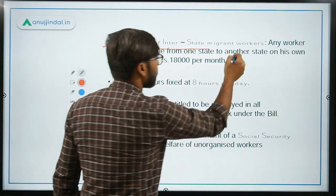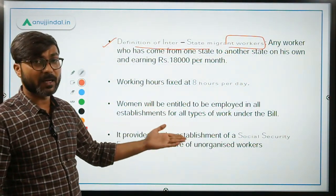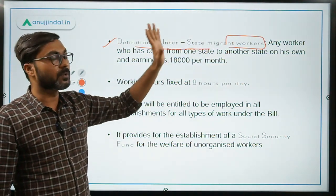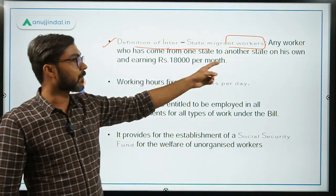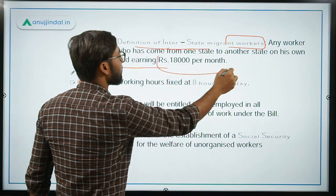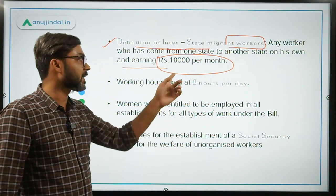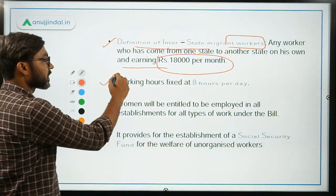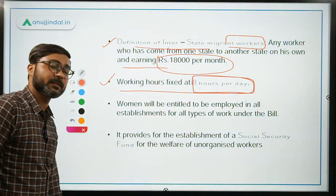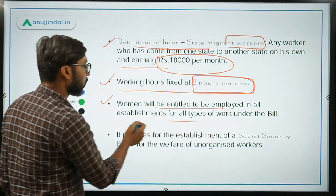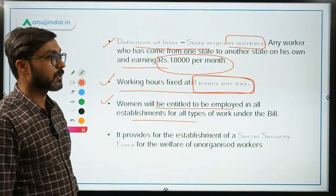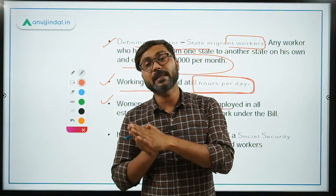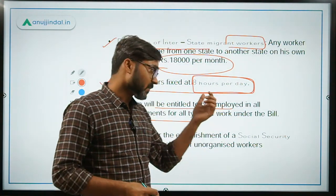For the first time, interstate migrant workers have been mentioned in this bill, because of the reverse migration that occurred due to coronavirus. Any worker who has come from one state to another and is earning up to Rs. 18,000 per month will be under the definition of interstate migrant workers. Working hours have been fixed at 8 hours per day — remember this as it is very important and can be directly asked in exams. Women will be entitled to be employed in all establishments for all types of work, including hazardous activities, but with some restrictions and proper women-friendly equipment.